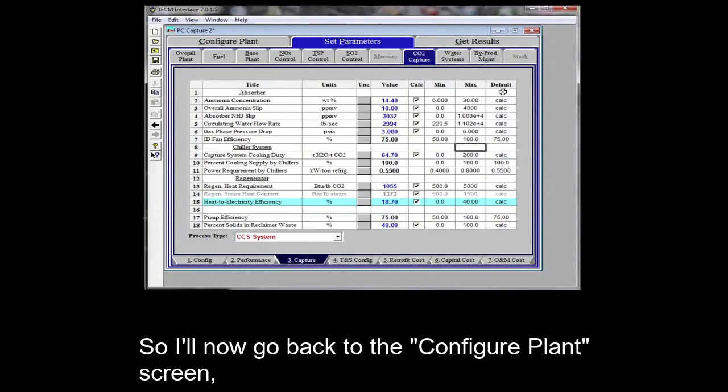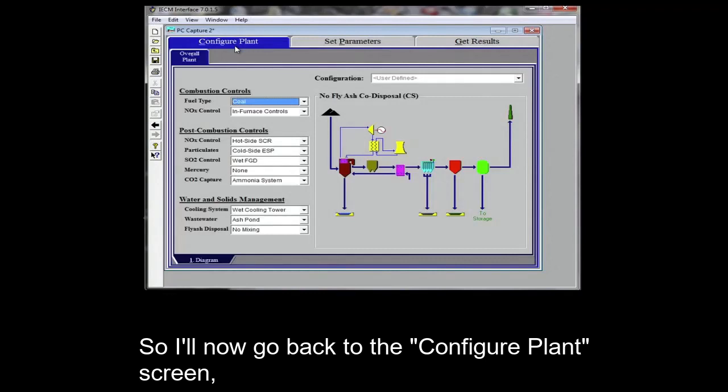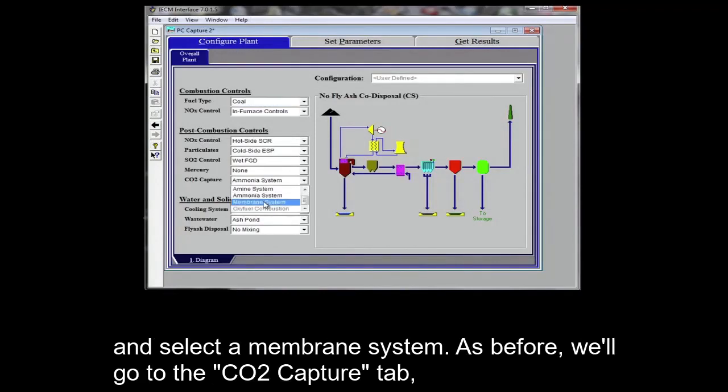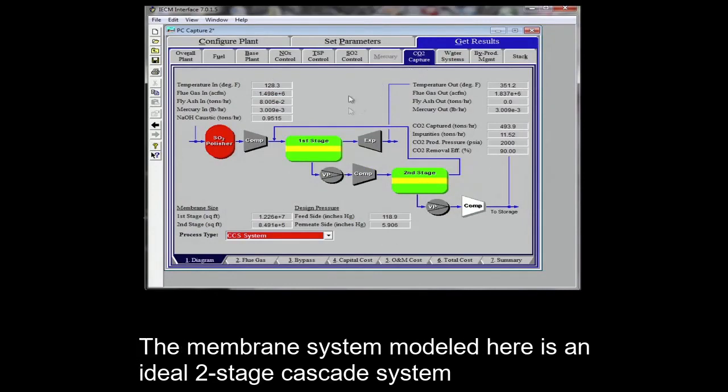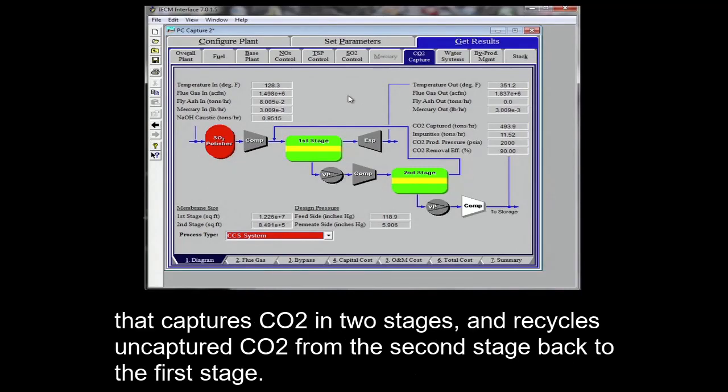As before, we'll go to the CO2 capture tab under get results. The membrane system modeled here is an ideal two-stage cascade system that captures CO2 in two stages and recycles uncaptured CO2 from the second stage back to the first stage.